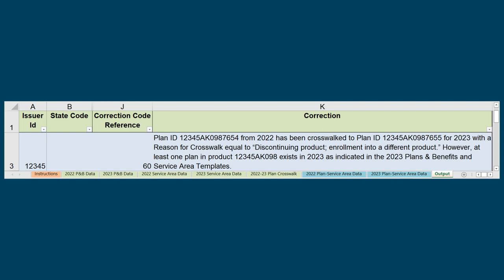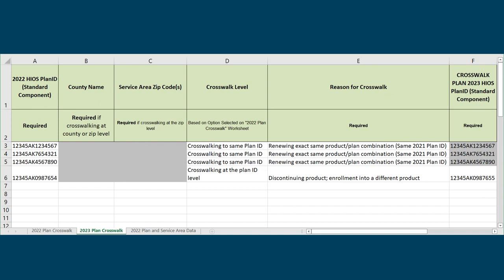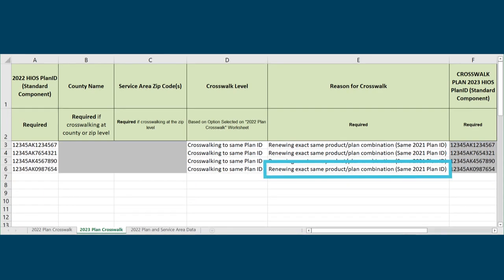there is at least one plan in Product X that exists this year as indicated in the issuer's current plan year Plans and Benefits and Service Area templates. This code appears when the same Product ID exists in the same Service Area for both plan years, but the issuer is attempting to crosswalk to a plan with a different Product ID. Plans must be crosswalked to the same product between plan years when it is available. To correct this error, open the PlanID Crosswalk template and change the current year's crosswalk plan to a plan with the same product as the previous year's plan and update the reason for crosswalk to accurately reflect the crosswalk.